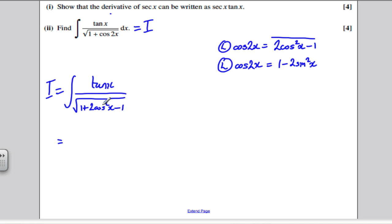And obviously, that 1 and that 1 cancel, so 1 minus 1 is 0. So this is the integral of tan x over the square root of 2 cos squared x, which I could clearly write as the integral of tan x over square root 2 and cos x.